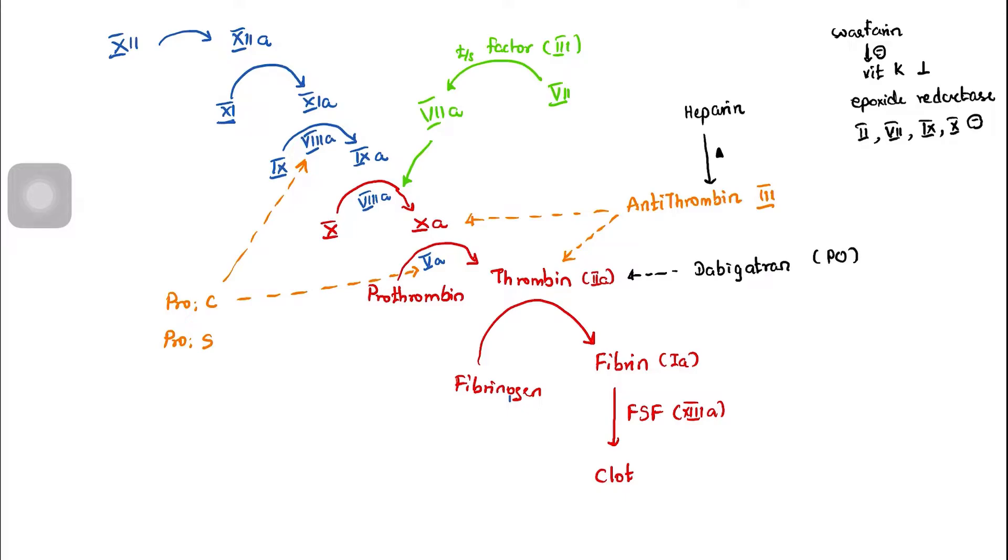Now we have direct thrombin inhibition. Sorry, how do we write factor 10a inhibition? Factor 10a inhibition is also important. Rivaroxaban is an example. There are also injectable forms for thrombin inhibition. Some are oral, some are injectable, so we categorize thrombin inhibition accordingly.